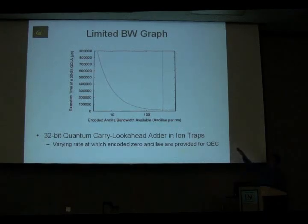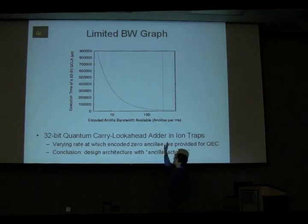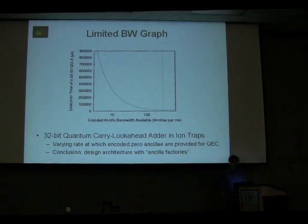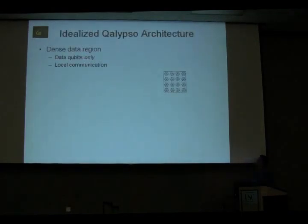On the x-axis we vary the rate at which these encoded zero ancilla are provided. On the y-axis we look at the latency of the overall circuit. Past a certain point on the right, data gets all the ancilla it needs, so increasing the bandwidth doesn't buy us anything — that's why it asymptotes. But as we start throttling the provided encoded zero ancilla, the latency starts skyrocketing. From an architectural perspective, this tells us we want to focus on making certain we can provide encoded ancilla fast enough that we don't get orders of magnitude higher latency.